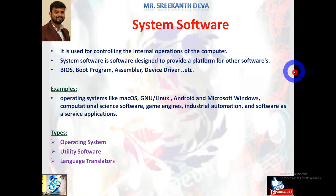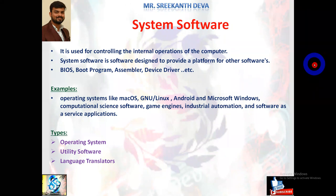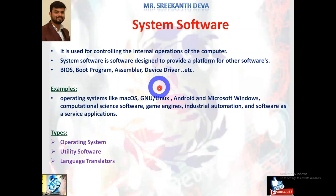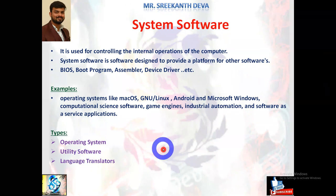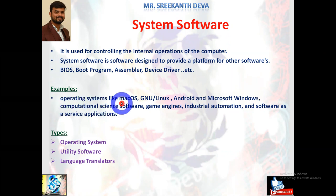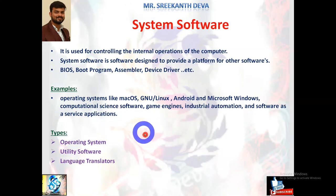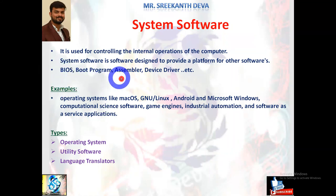System software converts instructions from user-understandable language to computer-understandable language and vice versa. It keeps track of CPU time and memory utilization by different running applications. Computer manufacturers usually provide system software. Various types of computers require different types of system software programs like operating systems, utility software, and language translators. Best examples include Mac OS, GNU Linux, Android, and Microsoft Windows. It also includes game engines, industrial automation, software as a service applications, BIOS, boot programs, assemblers, and device drivers.